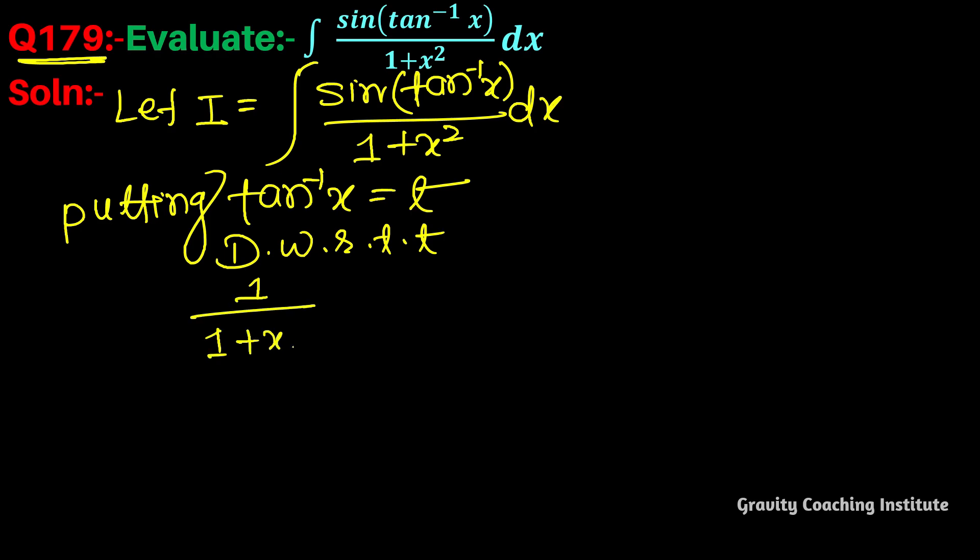Therefore, I = ∫sin(t) dt. The integral of sin(t) is -cos(t), so this equals